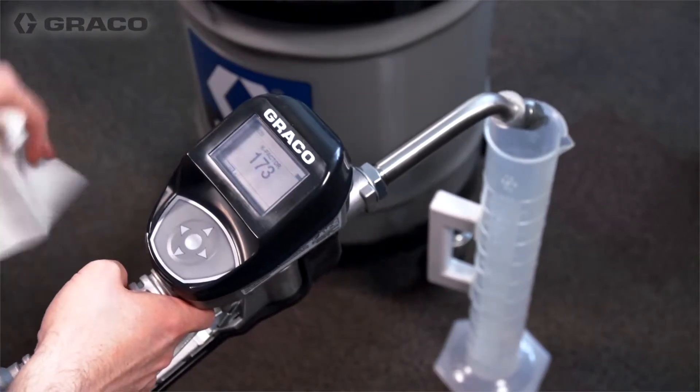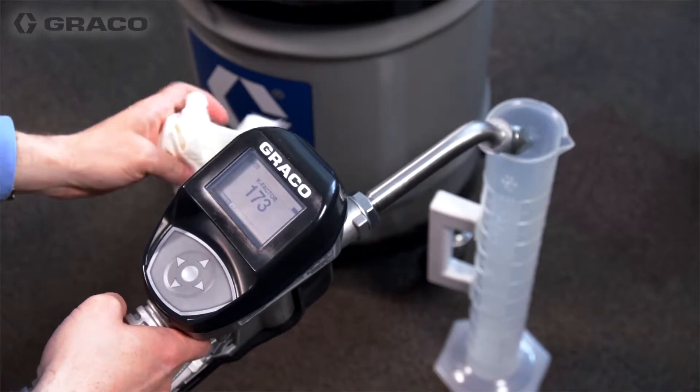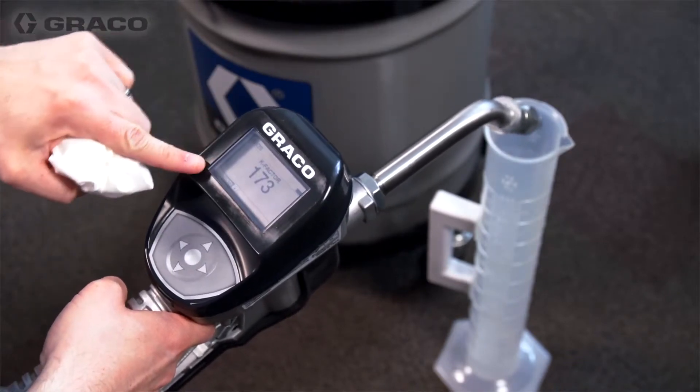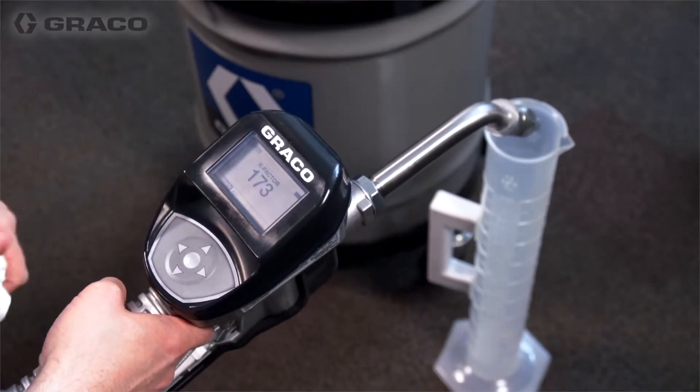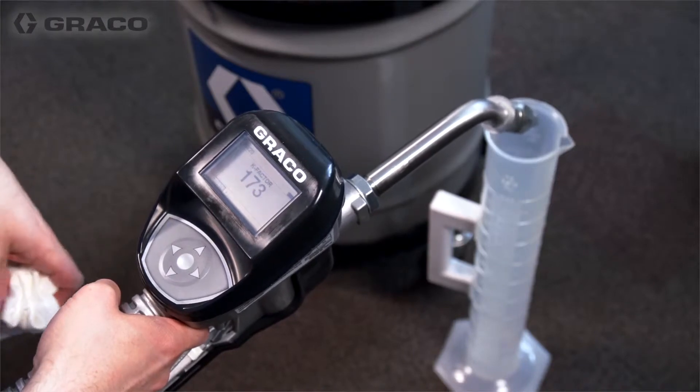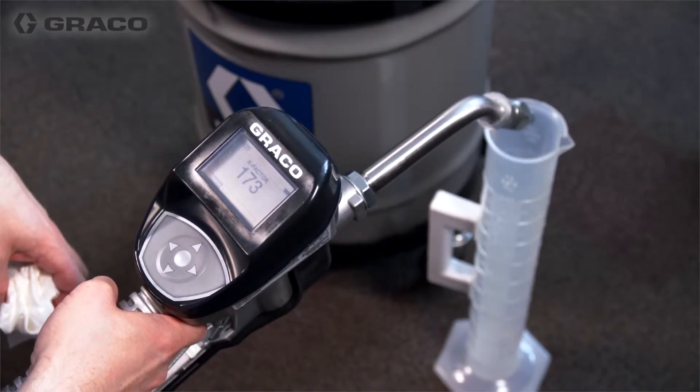The number shown on the display is the K factor the meter is currently using. After completing the calibration procedure, this number may be the same or may be different than what is currently shown on the display.